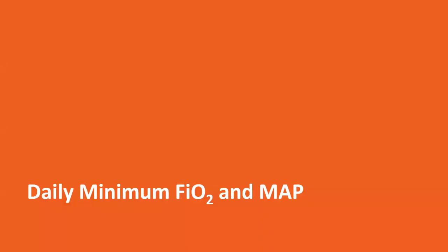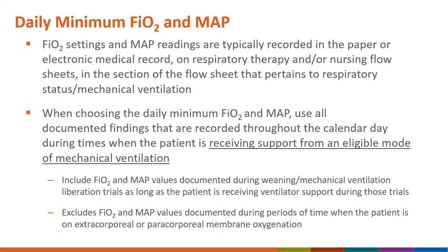FiO2 settings and MAP readings are typically found in the medical record — in documentation by the respiratory therapist, in the flow chart, or directly from the ventilator. You will look at all documented FiO2 and MAP values across the calendar day while the patient is receiving an eligible mode of mechanical ventilation, including during weaning periods. You would exclude FiO2 and MAP values if the patient is on extracorporeal or pericorporeal membrane oxygenation.